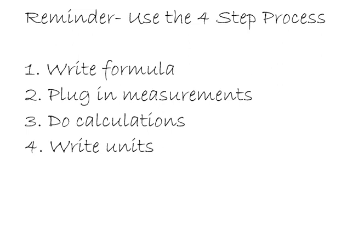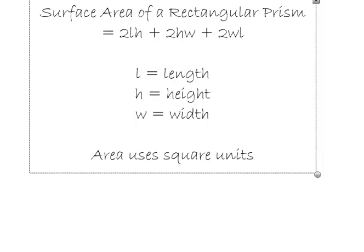As a quick review, you need to use the four-step process, especially when finding the surface area of a rectangular prism. Step one, you're always going to write the formula. Step two, plug in the measurements. Step three, do the calculations. And step four, check the units. The formula for surface area of a rectangular prism is 2lh + 2hw + 2wl.